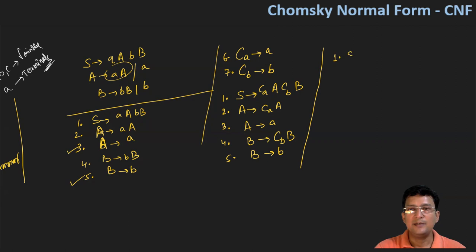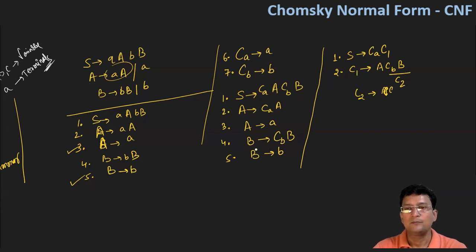Then after this, we rewrite production number one. So let's say we're writing this one number again as S produces, let's say CA followed by some C1. We have taken a new variable or new non-terminal. Now what we do is that for production one, since we have taken the C1 variable, we expand C1 further. Let's say C1 means A, CB and B. Okay, now this has three non-terminal symbols, this cannot happen in CNF. So what we do is that the CB and B part, we change this to another variable, let's say we have changed it to the C2 variable. So what will C2 be, C2 will be equal to CB and capital B.